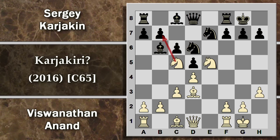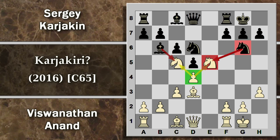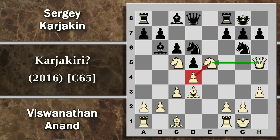Si prosegue con cavallo C5, facendo pressione sul pedone B7. Si gioca poi cavallo G6 con l'idea di sfruttare il sovraccarico di questo pedone: se non riesce a catturare uno dei due cavalli, presumibilmente il cavallo C5 che è il più pericoloso in attacco, l'altro perderebbe la protezione del pedone. Anand deve difendere; non può farlo con il pedone, lo fa con la donna portandola in attacco. Una posizione che potrebbe diventare velocemente pericolosa.